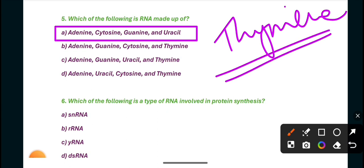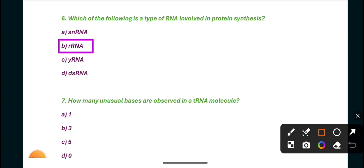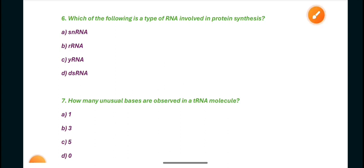Question six: Which of the following is a type of RNA involved in protein synthesis? Then rRNA, ribosomal RNA is the type of RNA which is involved in protein synthesis.